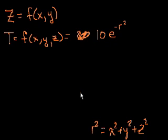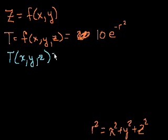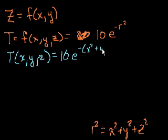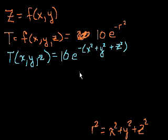So let's write the temperature as a function of x, y, and z equal to 10e to the minus x squared plus y squared plus z squared. That's exactly what I wrote before — instead of writing x squared plus y squared plus z squared, I wrote r squared, just to give the intuition that this expression is the square of the distance from the origin, coordinate 0, 0, 0.